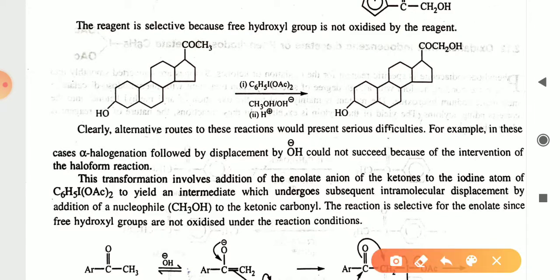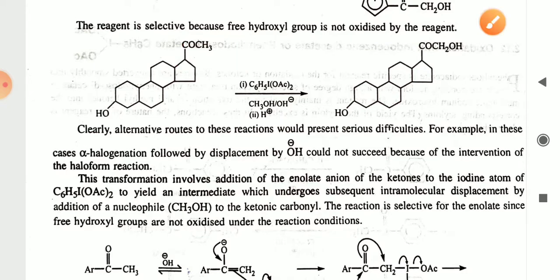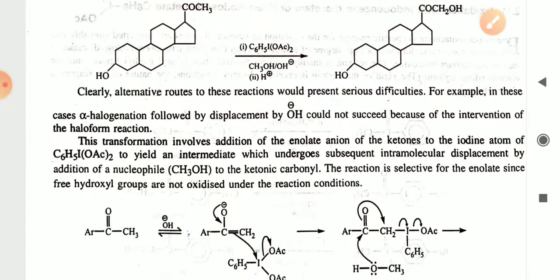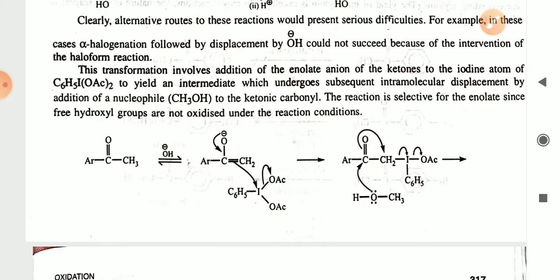Only the COCH₃ group will convert into the COCH₂OH group. The alternative route of this reaction would present serious difficulty because this transformation involves the addition of enolate ions to the iodine atom of C₆H₅I(OAc)₂ to yield an intermediate, which undergoes subsequent intermolecular displacement by the addition of nucleophilic CH₃OH to the ketonic carbonyl. The reaction is selective for the enolate since free hydroxyl groups are not oxidized under these reaction conditions.